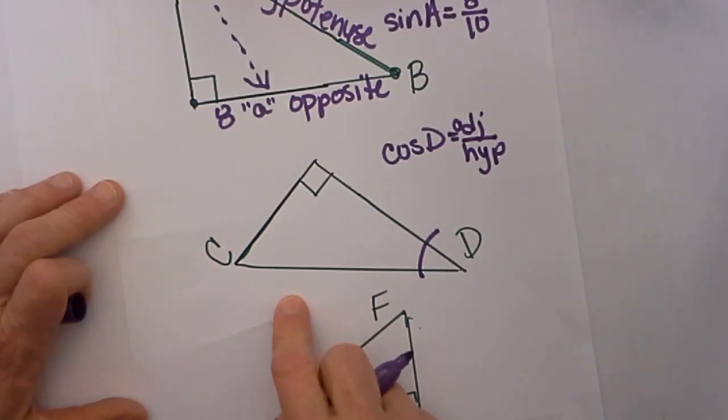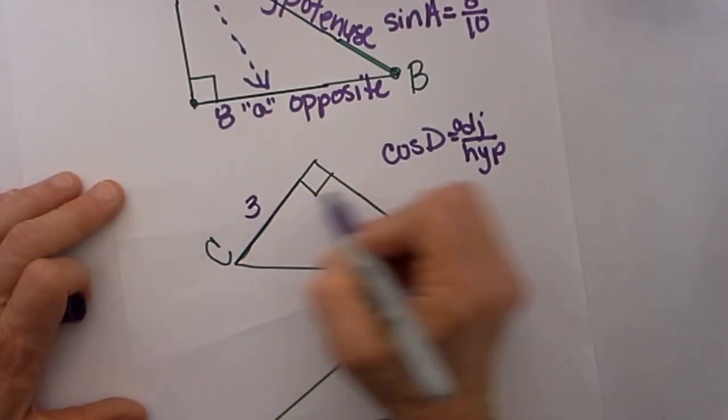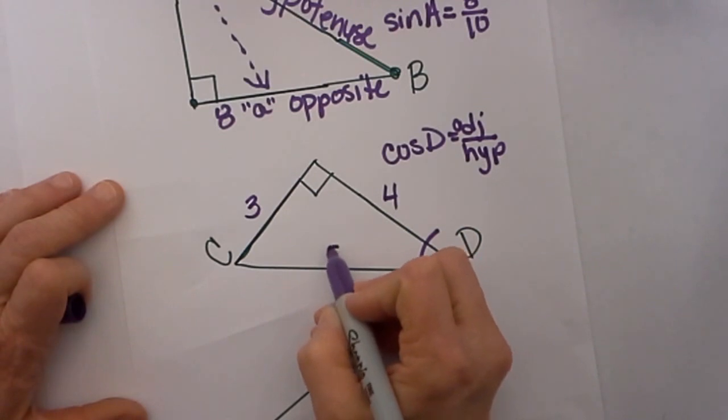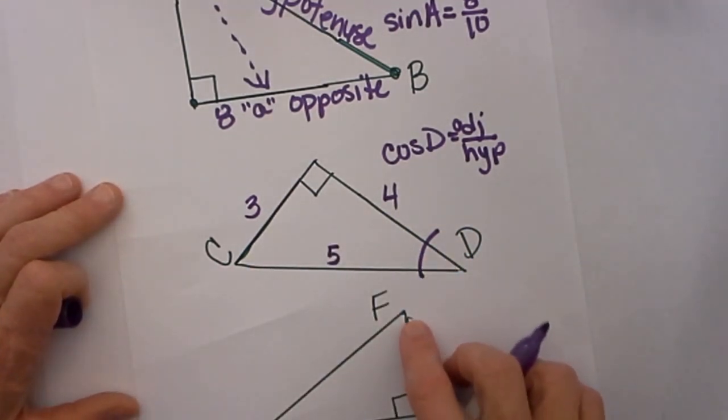Let me go ahead and give each side a length. Let's say that this side is 3, this side is 4, and this side is 5. I know that is a right triangle because that is one of our triples.